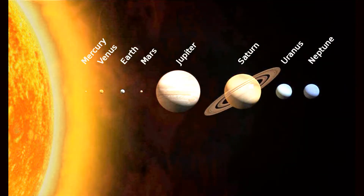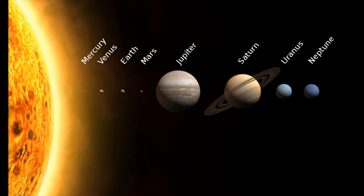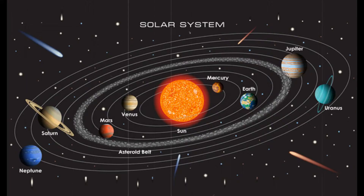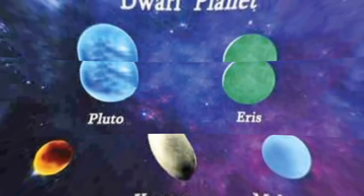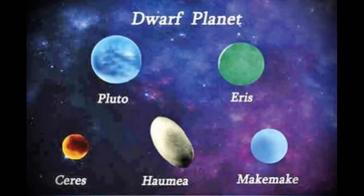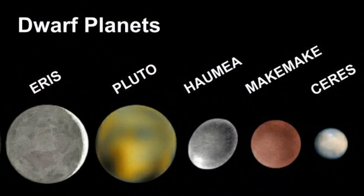The planets in the solar system are Mercury, Venus, Earth, Mars, Jupiter, Saturn, Uranus, and Neptune. The moon moves around the sun and at the same time it moves around the Earth — the moon interacts with both the Earth and the sun. Scientists used to call Pluto the ninth planet, but in 2006 scientists decided that some objects in the solar system including Pluto should be called dwarf planets.